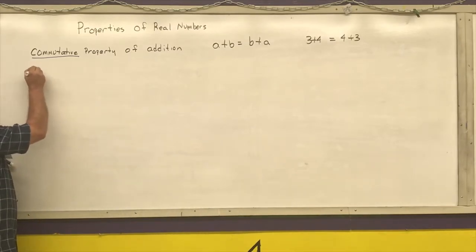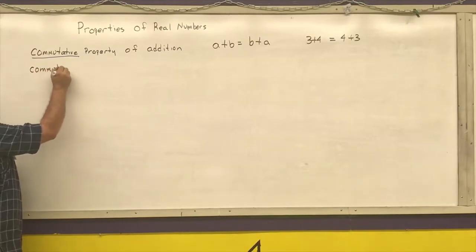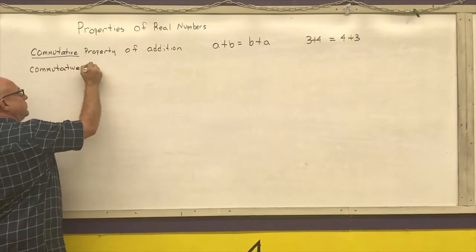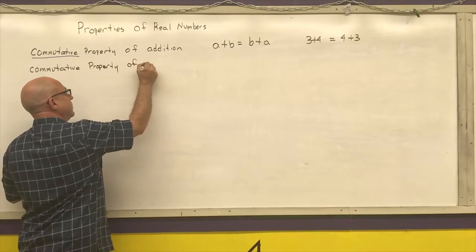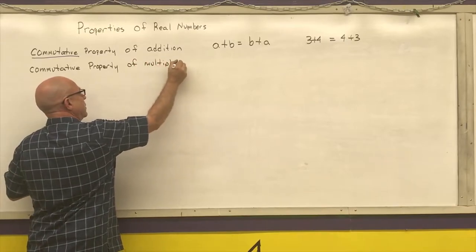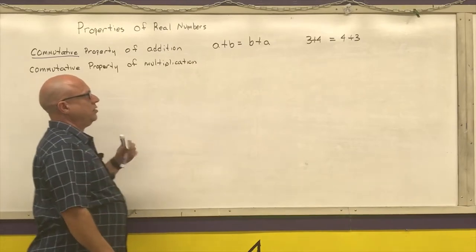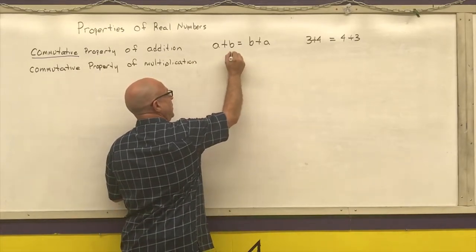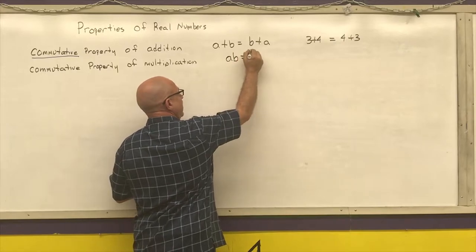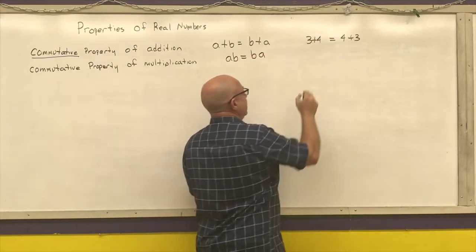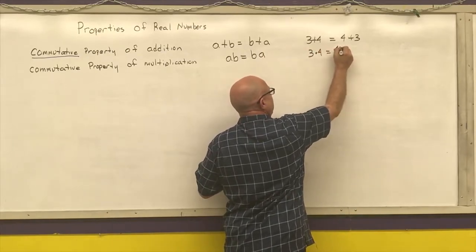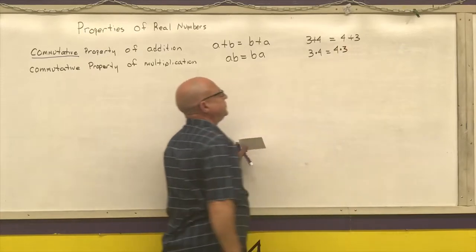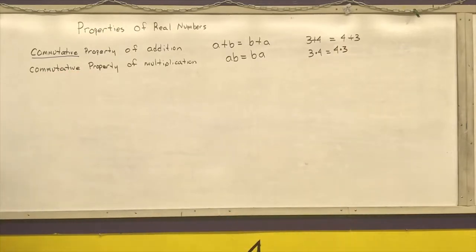Then I have the commutative property of multiplication. Again, order does not matter. A times B is the same thing as B times A. 3 times 4 is the exact same thing as 4 times 3. So those are my two commutative properties.